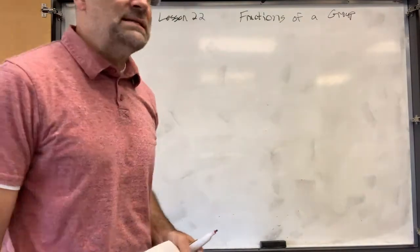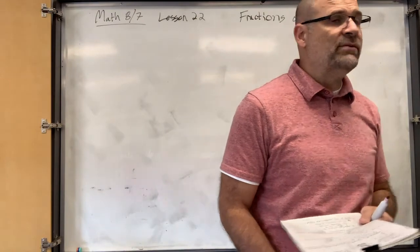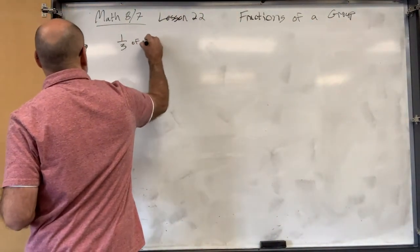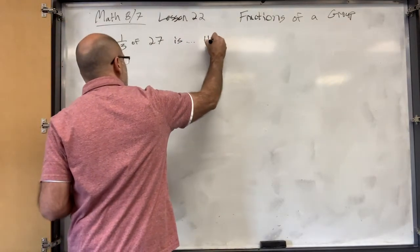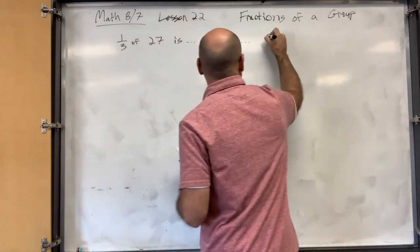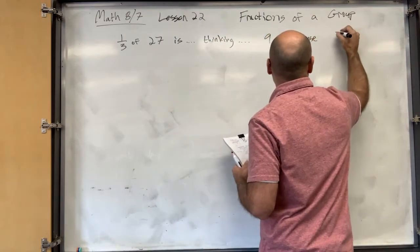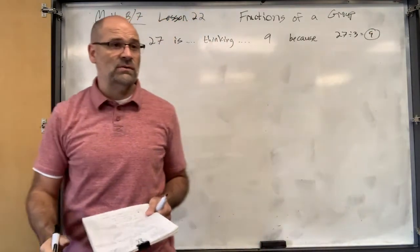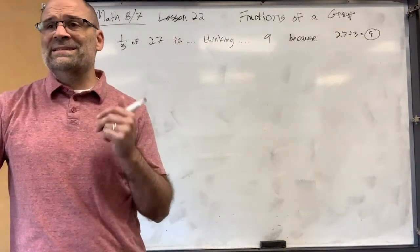Let's start with just an example. Let's say I wanted to find a third of 27. What's one-third of 27? I'm thinking. Whoa, you got it before I wrote the word thinking. Yeah, nine because you just say 27 divided by three equals nine. Okay, that's how you find a third of something, right? You divide by three.